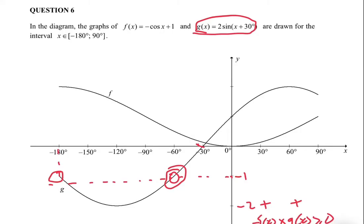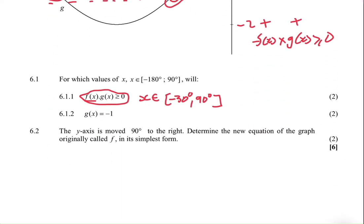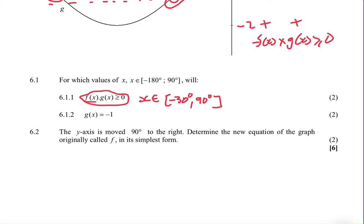And then you substitute -60° into the equation of g(x) and see if you get -1. And that is exactly what I'm getting.